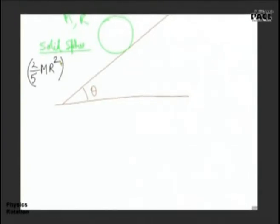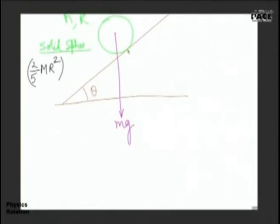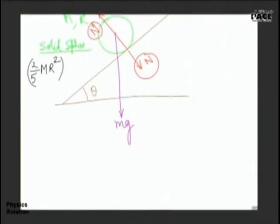Let me draw the free body diagram. Can anyone tell me what are the forces acting on it? Is the gravitational force acting on the sphere? Yes, it is acting in the vertically downward direction. And there is a contact force - a normal reaction between the sphere and the wedge - acting along the common normal in this direction. Any other force? Friction force.